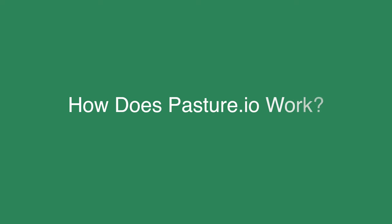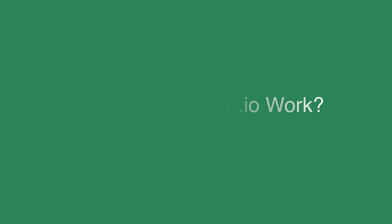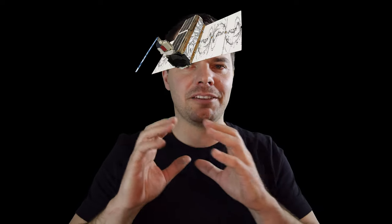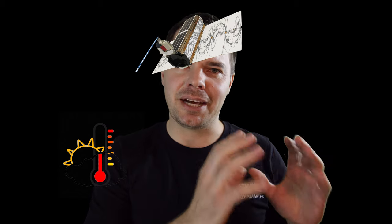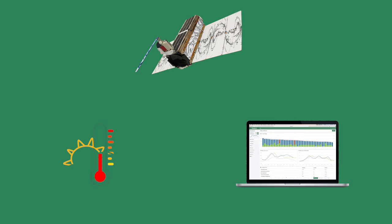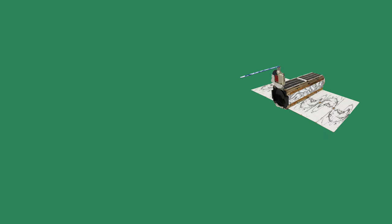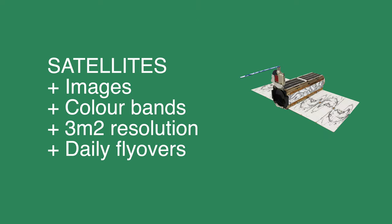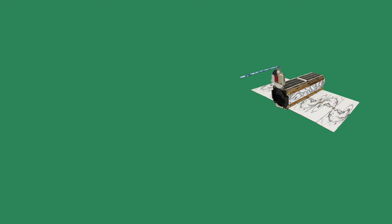How does Pasture.io work? We like to talk of it in three pieces of information: satellites, weather, and paddock activities. Satellites provide us with different colour bands — red, green, blue, near infrared — among many other different optics and sensors.